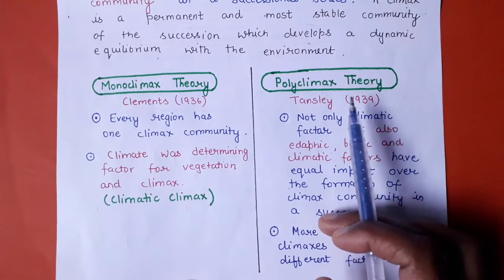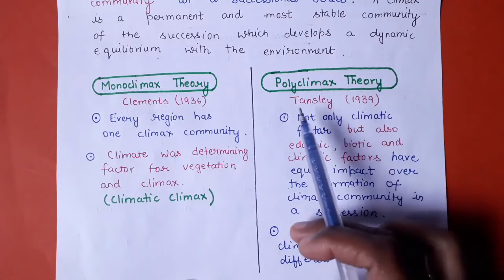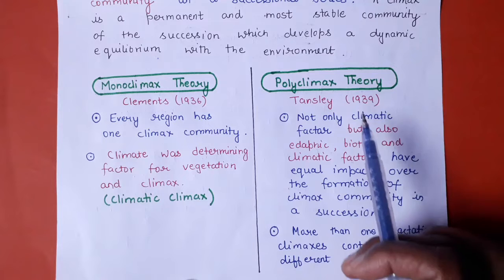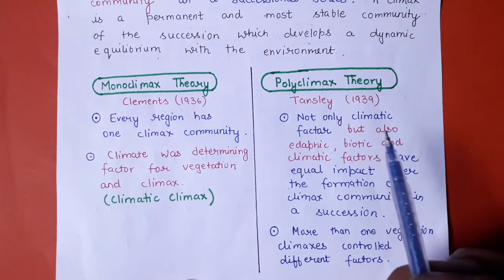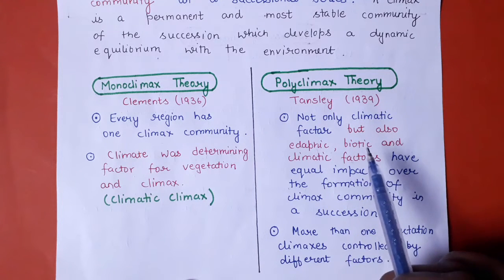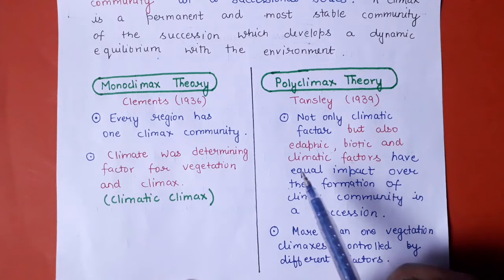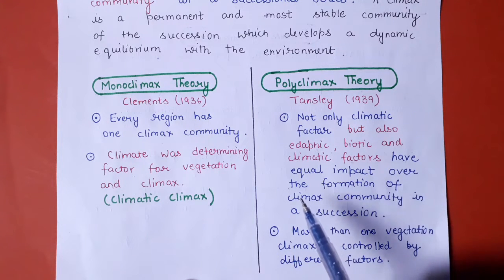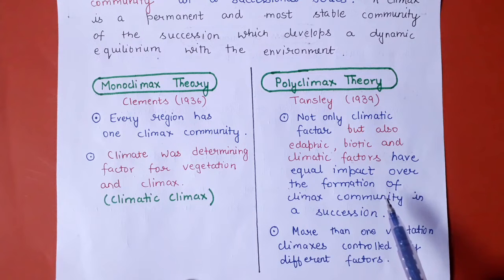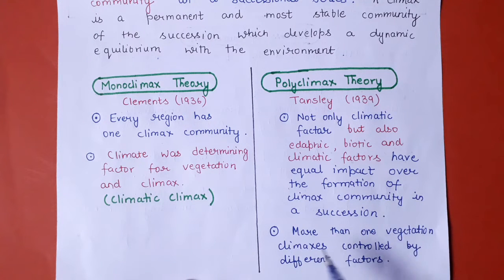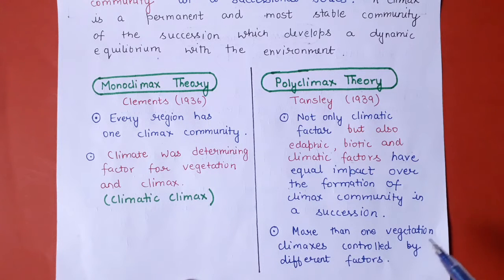The polyclimax theory given by Tansley states that not only climatic factors but also edaphic, biotic, and other factors and their combination have equal impact on the formation of the climax. According to him, more than one vegetation climax is controlled by different factors — different factors contribute to different vegetation climaxes.